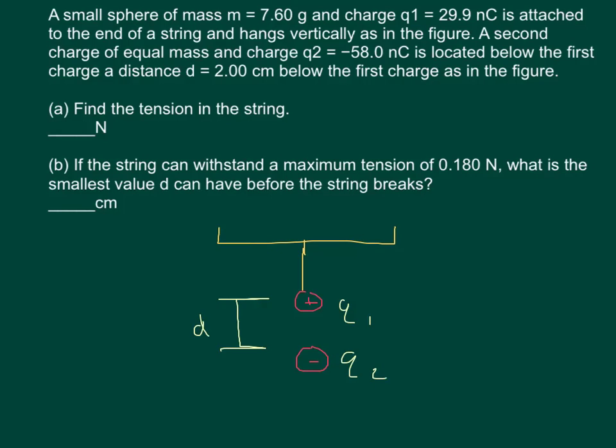Question 3 says a small sphere of mass 7.6 grams and charge Q1 equals 29.9 nanocoulombs is attached to the end of a string and hangs vertically as in the figure.